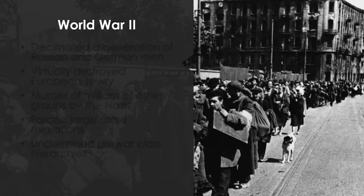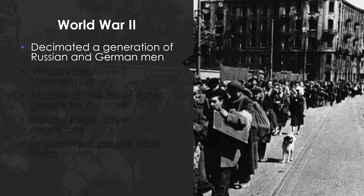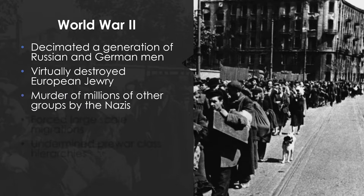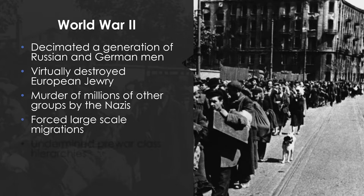As far as our review of World War II, keep in mind that World War II decimated a generation of Russian and German men. Russian losses in the war are about 22 million. The Holocaust resulted in the virtual destruction of European Jewry — six of the nine million Jews in Europe were killed. Many survivors went to Israel or had a harder time going back to their former lives; many came to the United States as well. In addition, there was the murder of millions of other groups by the Nazis: the Roma, homosexuals, and people with disabilities. Combined with forced large-scale migrations both during and after the war, millions were left homeless and relocated, adding to the misery in Europe.